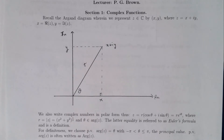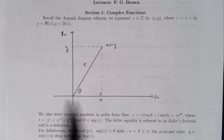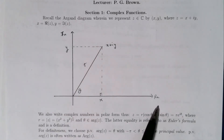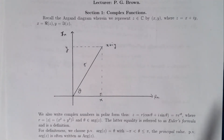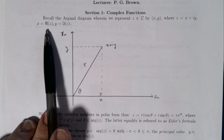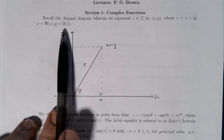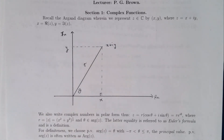We have the Argand diagram, which is simply like the xy-plane except we have a real and imaginary axis. We represent a complex number z by using its coordinates x, y where z is x plus iy. We call x the real part of z and y the imaginary part of z. So we can take a complex number and represent it in the plane.